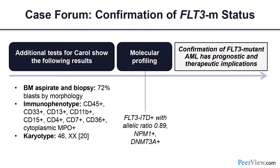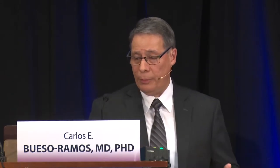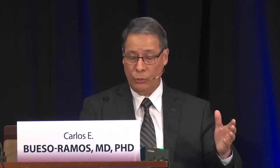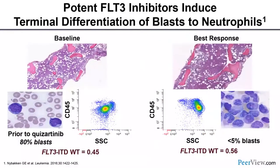The case had triple hits: FLT3-ITD with an allelic ratio of 0.89, NPM1 mutation, and DNMT3A mutation — effectively an FLT3-mutant AML. European groups have reported that cases with diploid karyotype and these triple hits actually differentiate under FLT3 inhibitor treatment, rather than showing cytotoxic response. You can see the marrow remains hypercellular but blasts shift to a more left-shifted myelocyte/metamyelocyte pattern, also visible by flow cytometry.